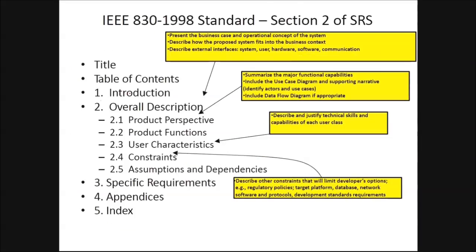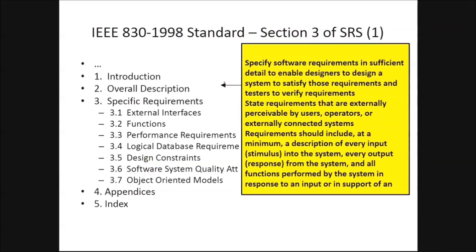Section 2 covers the overall description. The product perspective presents the business case and the operational concept of the system — it describes how the proposed system fits into the business context and describes external interfaces like system, user, hardware, software, and communication. The constraints section describes other constraints that limit developers' options, such as regulatory policies, target platform, database, network, software and protocols, development standards, and requirements.